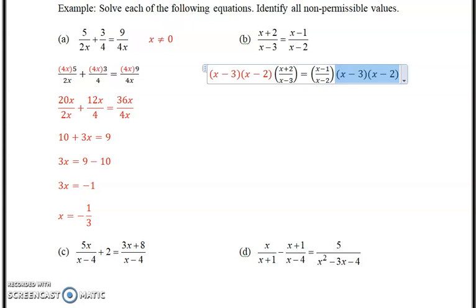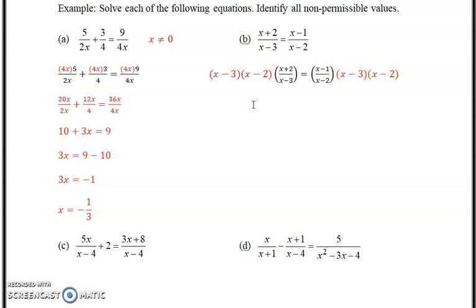So multiply each side by (x-3)(x-2). This (x-3) divides with this (x-3), and this (x-2) divides with this (x-2). So you're left with (x+2)(x-2) equals (x-1)(x-3). Remember, you may remember doing this when you had regular fractions.